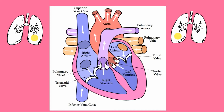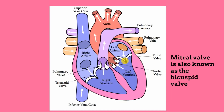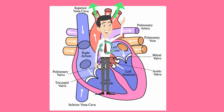In the lungs, carbon dioxide is exchanged for oxygen and the blood returns to the left side of the heart by way of the pulmonary veins. It enters the left atrium and passes through the bicuspid valve and into the largest and strongest chamber of the heart, the left ventricle. When the left ventricle contracts, the blood is pushed through the aortic valve and into the aorta, which is the largest blood vessel in the body. The blood travels throughout the body and this cycle repeats itself.